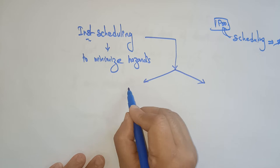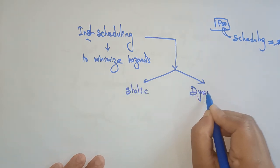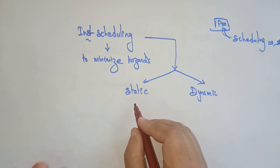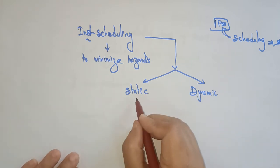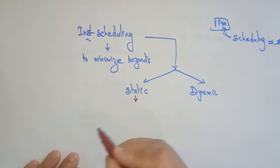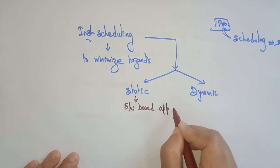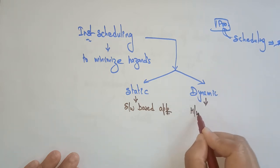So scheduling means arranging instructions in a proper manner to minimize hazards. Static scheduling is a software-based approach, and dynamic scheduling is a hardware-based approach.